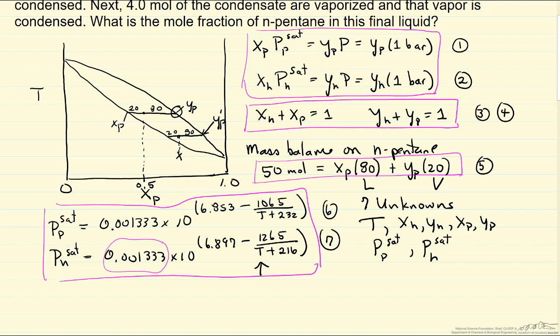And let me give you the answer. So the temperature is 58.5 degrees C, mole fraction of pentane in the liquid phase is 0.413, and the mole fraction of pentane in the vapor phase is 0.848. As you can see, we've enriched pentane significantly from a mole fraction of 0.5 to 0.848.